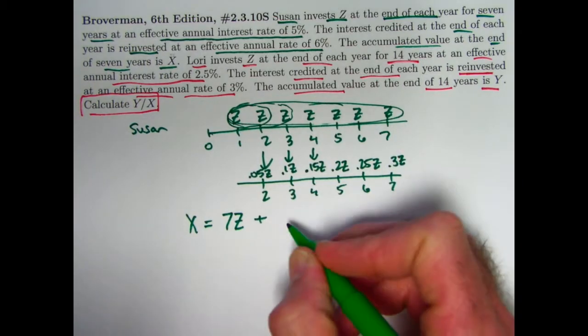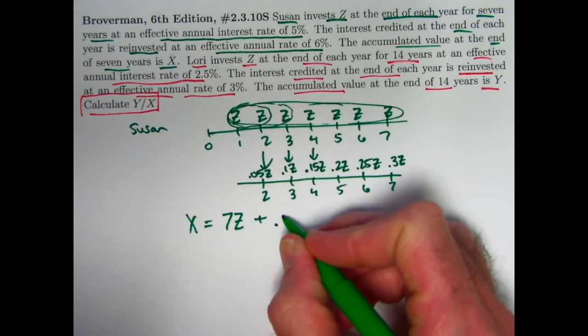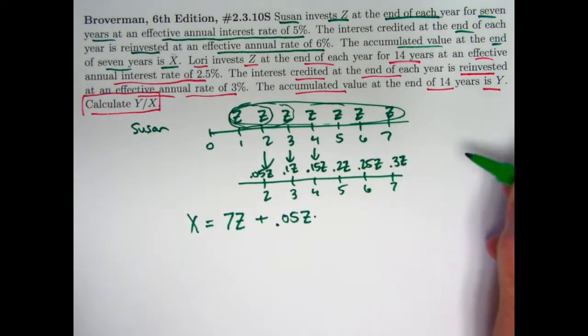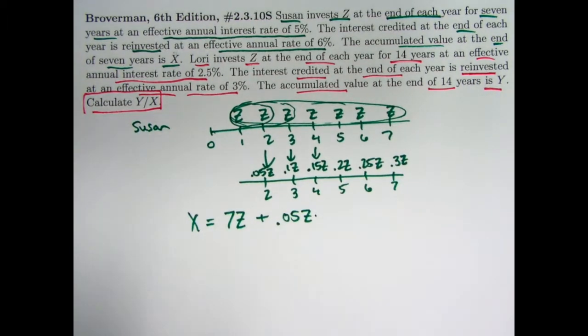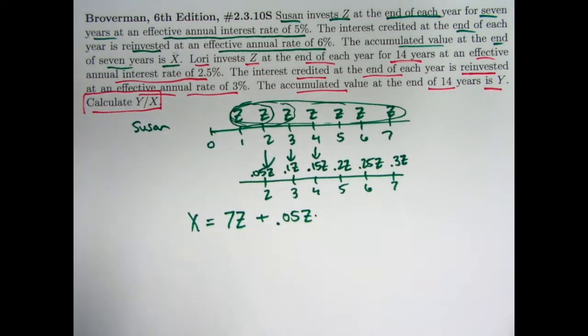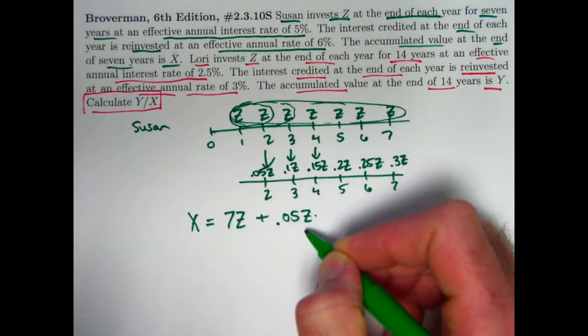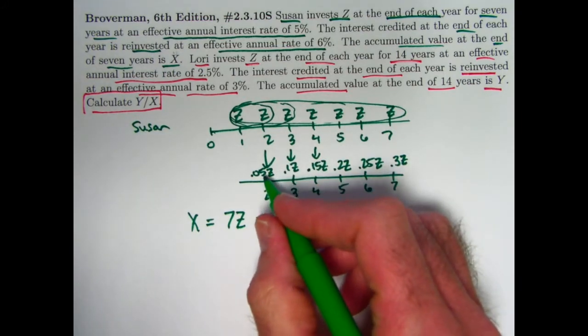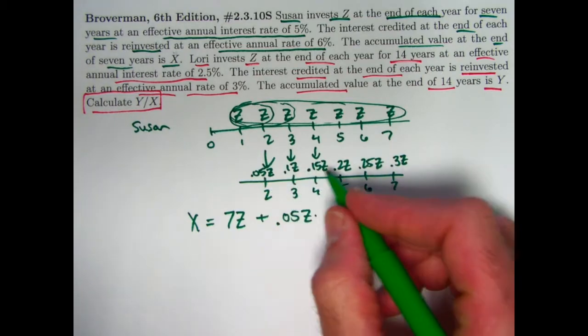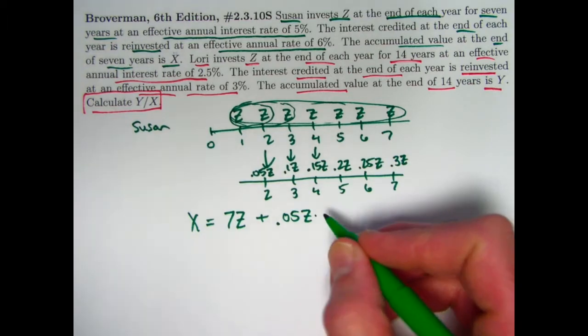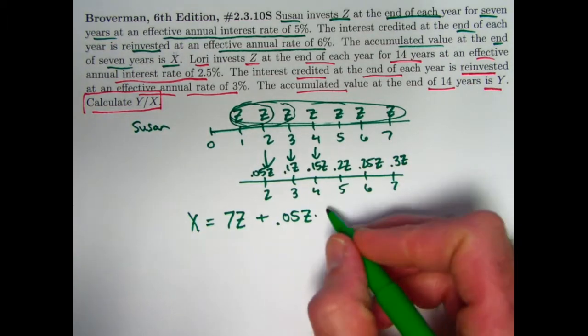But what about what's going on here? Let me write it this way: 0.05Z times something. Recall from video number 50 that we were talking about arithmetically increasing annuities, where the deposits or payments were 1, then 2, then 3, then 4, then 5. 0.05Z multiplied by 1 would give you this quantity, multiplied by 2 would give you this one, multiplied by 3 would give you this one. This is 0.05Z times that kind of annuity that we looked at in video number 50.